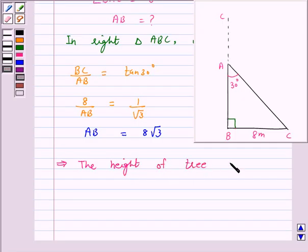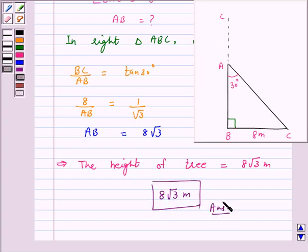This implies the height of the tree is 8 root 3 meters. Hence, the answer for the above question is 8 root 3 meters.